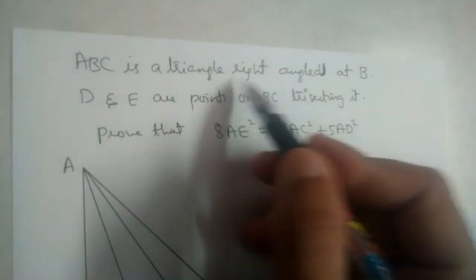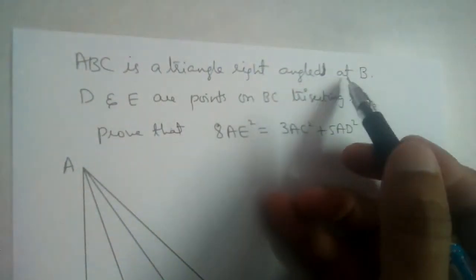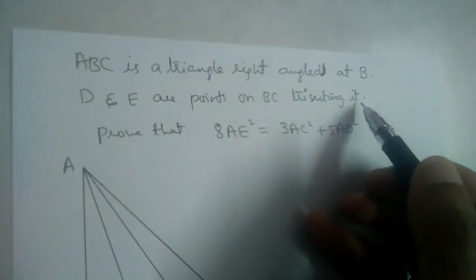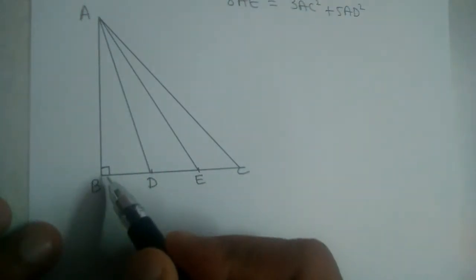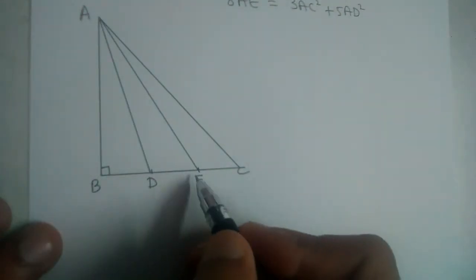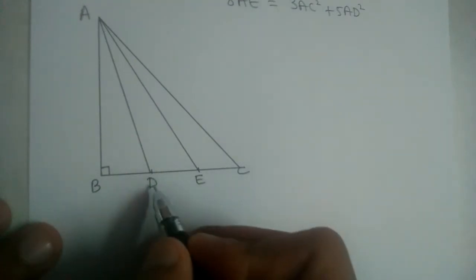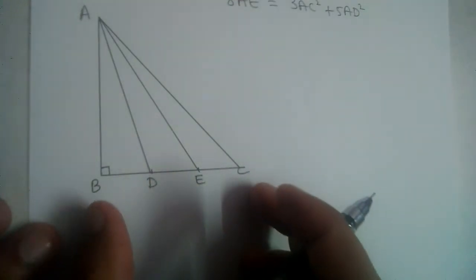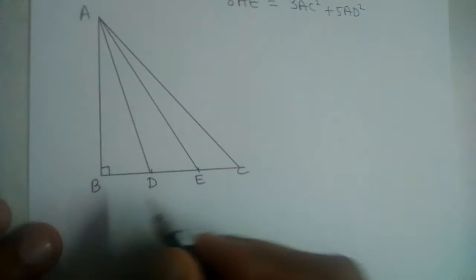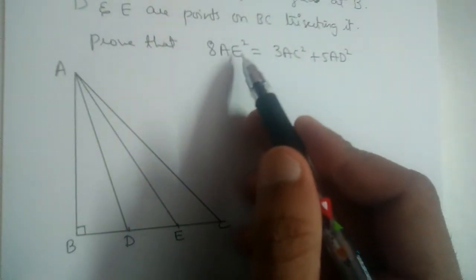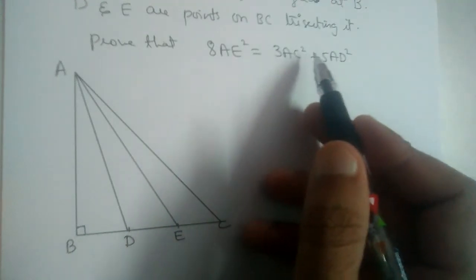ABC is a triangle right-angled at B. D and E are points on BC trisecting it, meaning D and E divide line segment BC into 3 equal parts. Prove that 8AE² = 3AC² + 5AD².